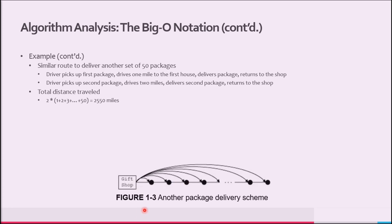Figure 1-3 illustrates this delivery scheme. The driver delivers only one package at a time; after delivering a package, the driver comes back to the shop to pick up and deliver the next package. Using this scheme, the total distance traveled to deliver the packages and get back to the store is basically 2 times (1 + 2 + 3 + ... + 50), which equals 2,550 miles.